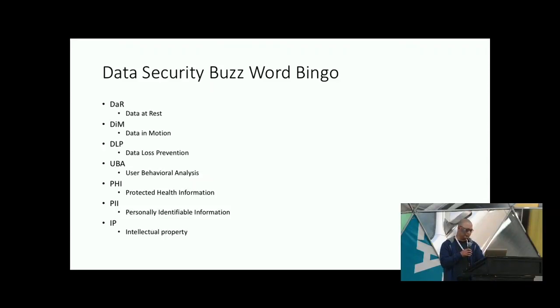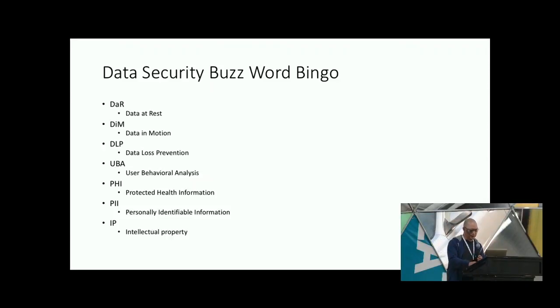PHI is protected health information. PII is personally identifiable information. And then we have intellectual property, IP.